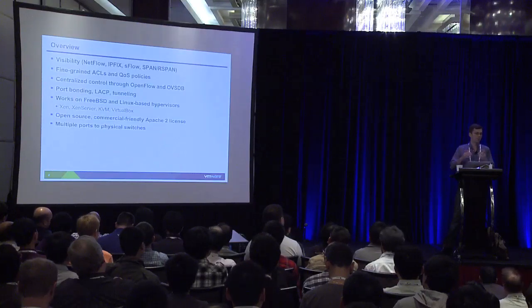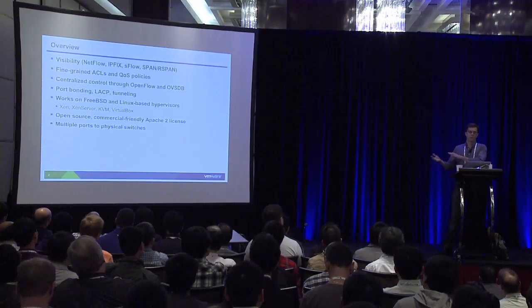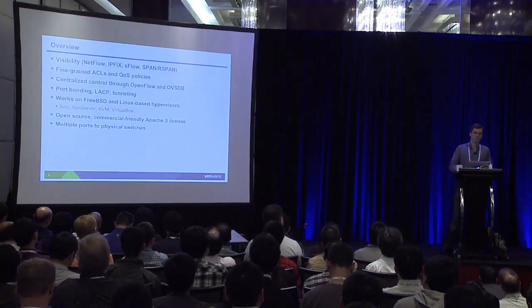It's written with an Apache 2 license, except for the kernel module which is GPL because of obvious restrictions. Something that a lot of people aren't aware of is that Open vSwitch is used in a lot of hardware switches as their OpenFlow stack. The architecture is done in such a way that it's easy to port to new soft switches and also to hardware switches as well.